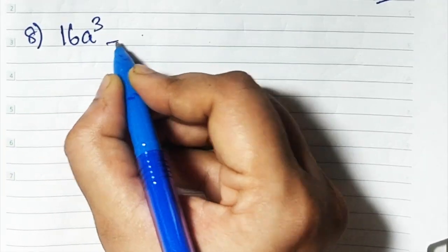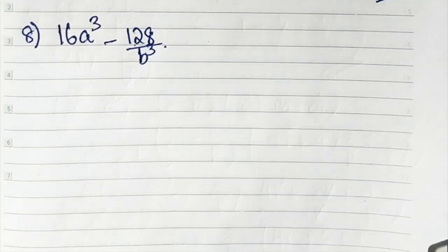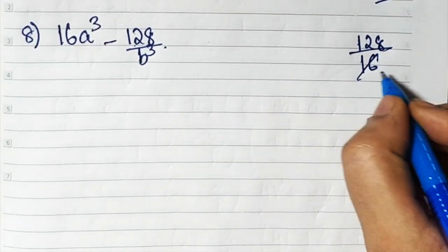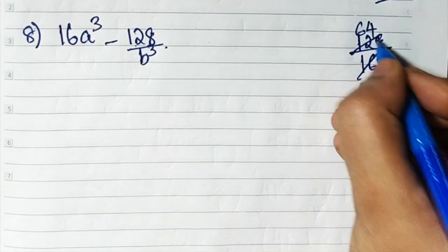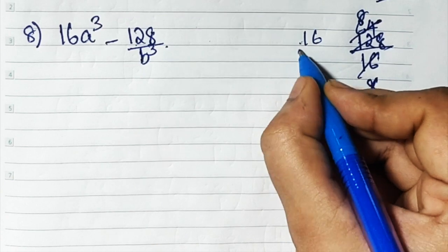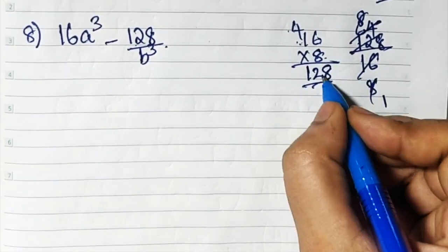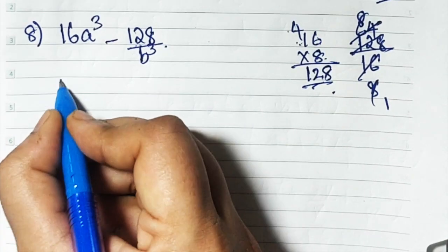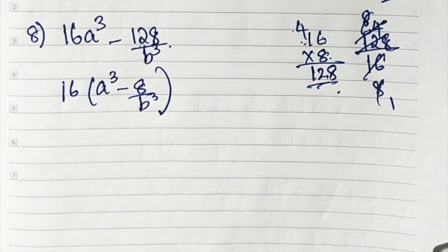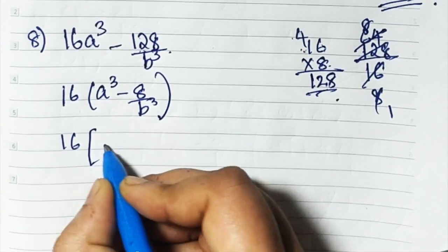Sum number 8 says 16a cube minus 128b cube. First, take 16 common out. 128 divided by 16 is 8, so what remains is a cube minus 8b cube. Converting into a cube b cube pattern with 16 common outside: 16 times (a) cube minus (2/b) whole cube, because cube of 2 is 8.